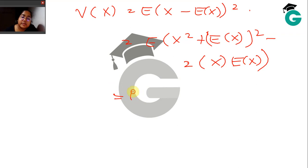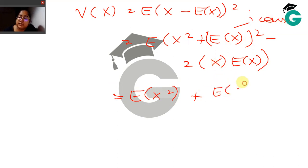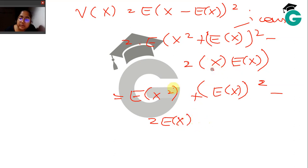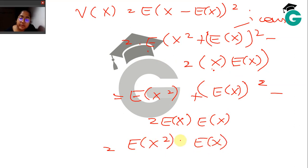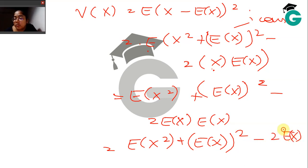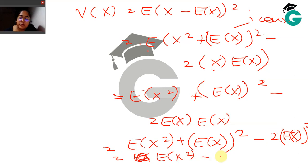Since E[X] is a constant, the expectation of a constant is the constant itself, so (E[X])² comes out as is, and −2E[X] comes out as a constant while the expectation attaches to X. This simplifies to E[X²] + (E[X])² − 2(E[X])², which gives V(X) = E[X²] − (E[X])².